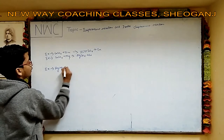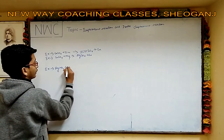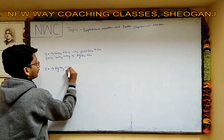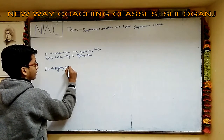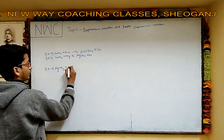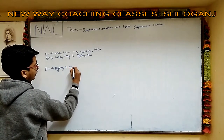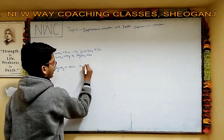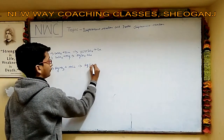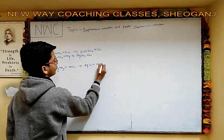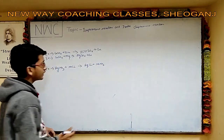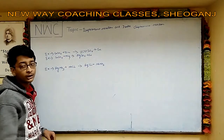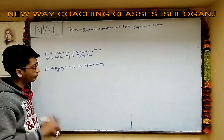AgNO₃ + NaCl → AgCl + NaNO₃. AgCl forms a white precipitate. This product is not soluble — an insoluble substance is produced.